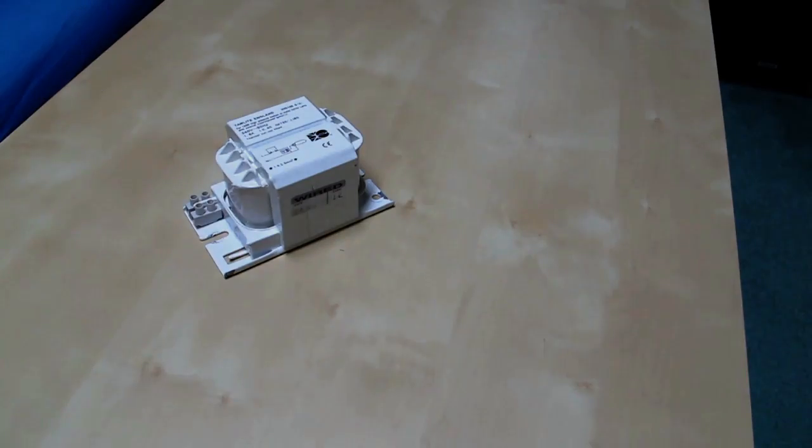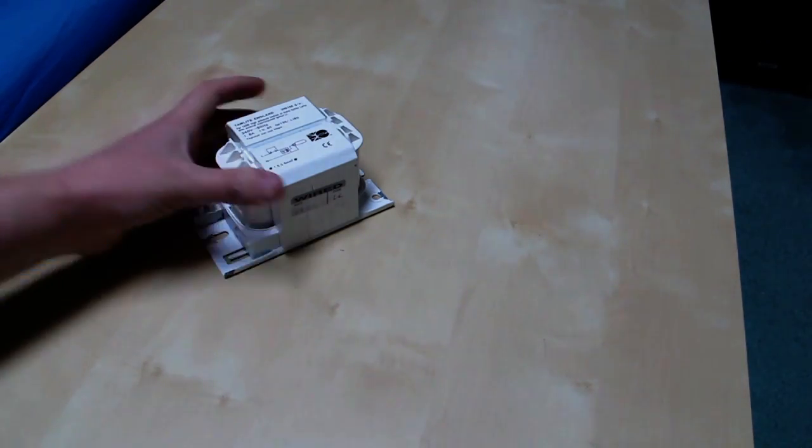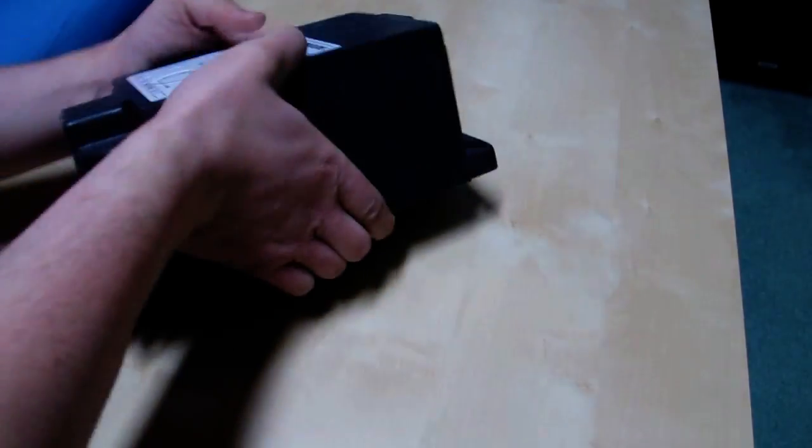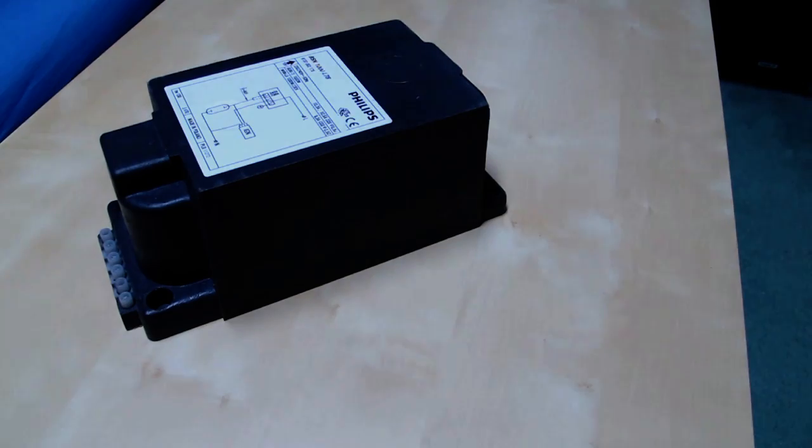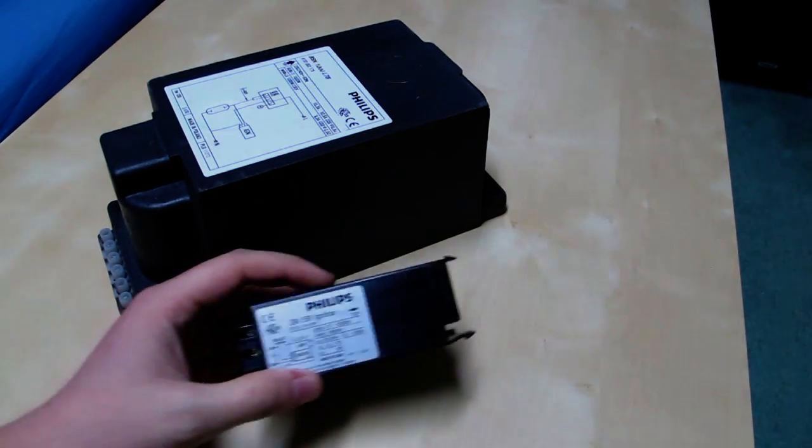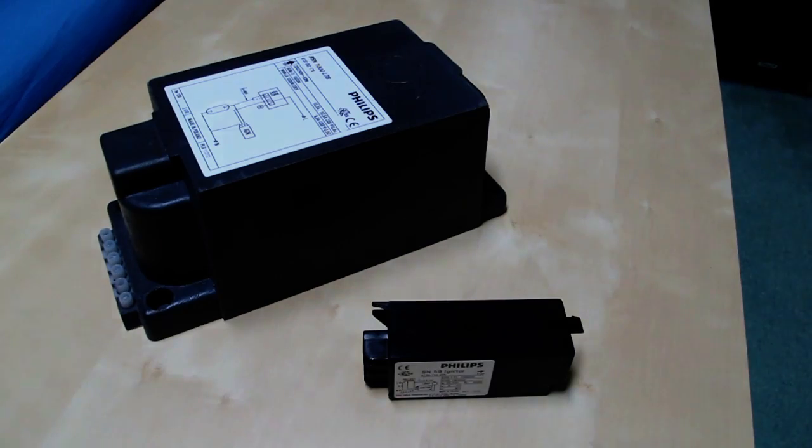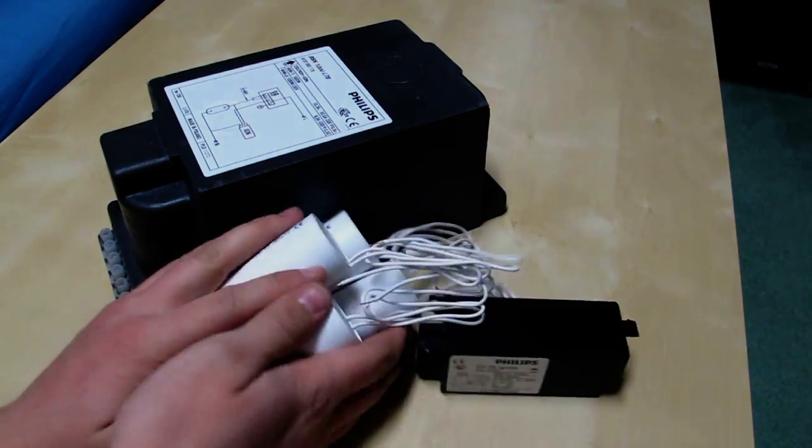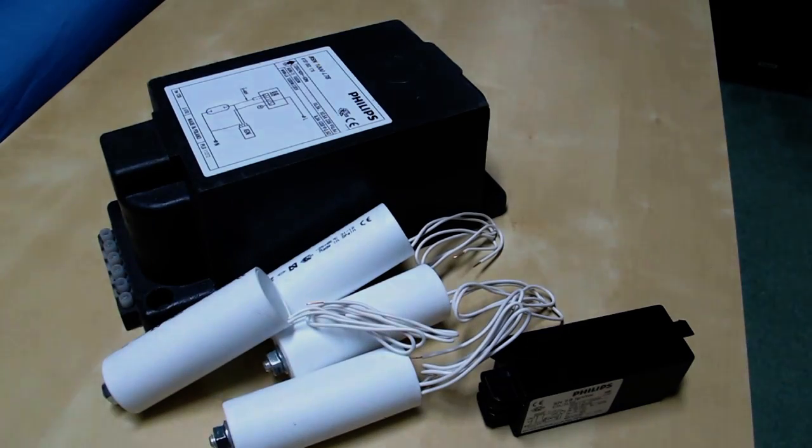Obviously to power this lamp up we need control gear such as a ballast. Not this one though, that one. We also need for the high voltage pulse to start it an igniter, and a ballast that big. We also need 100 microfarads worth of power factor correction. Let's go and power it up outside.